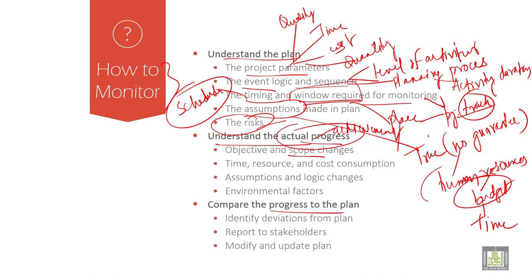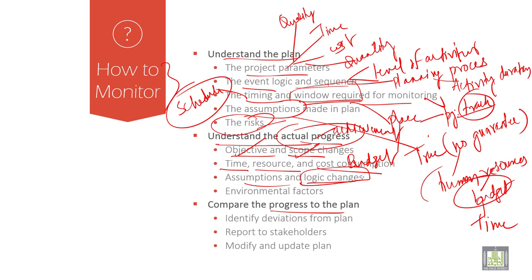Then objective and scope: what is the objective of the project, what is the scope, the benefit of the project, and how it is done. It also talks about time, resources, cost consumption, and budget. Then assumptions and logic changes — it talks about the variety in changes. Then environmental factors like water, air, and other environmental factors.